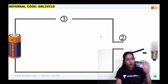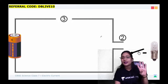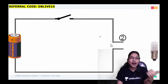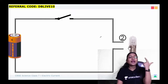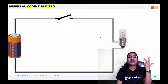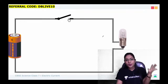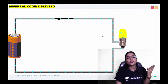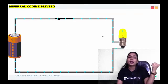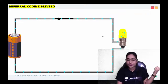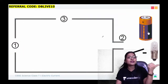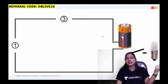There are four components. The cell or battery, then we have a switch, connecting wires, and the bulb. These four things should be there to have a complete circuit.